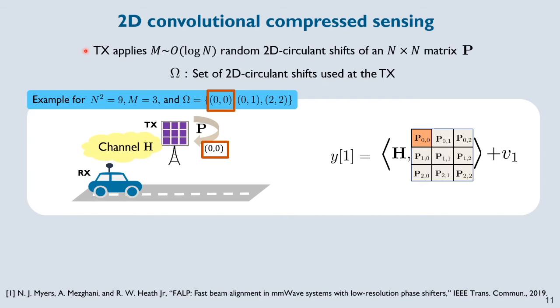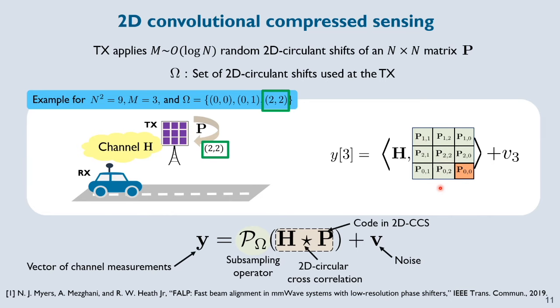In 2D CCS, the transmitter basically applies distinct random 2D circular shifts of a code P for the receiver to acquire channel measurements. Let me explain 2D CCS using an example here. For this example, the channel and a spatial code have to be of dimensions 3 by 3. Let's say the transmitter applies 0, 0, 0, 1 and 2, 2 circular shifts of P in sequence. For each of the matrices that are applied at the transmit array, the receiver acquires a channel measurement which is an inner product between the channel and the code used at the transmit array. So Y here is inner product between H and P, Y here is inner product between H and P circulantly shifted by 0, 1 and Y here is inner product between H and P circulantly shifted by 2, 2.